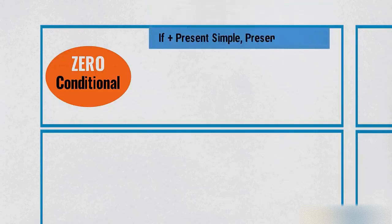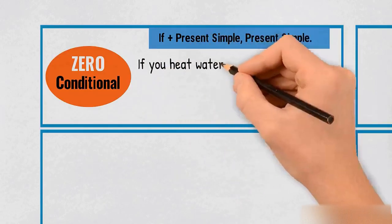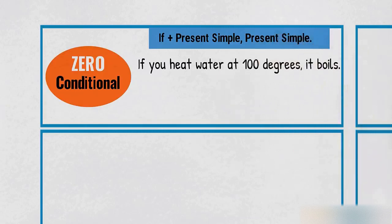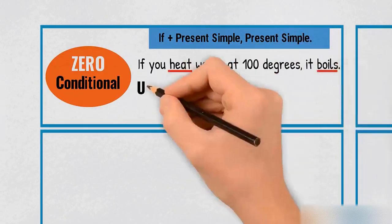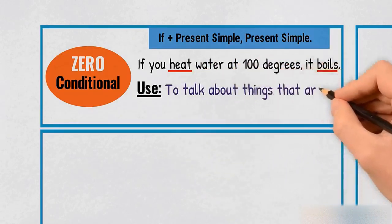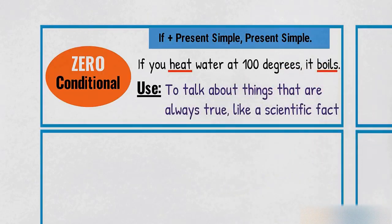Zero conditional. If plus present simple, present simple. If you heat water at 100 degrees, it boils. Use: To talk about things that are always true, like a scientific fact.